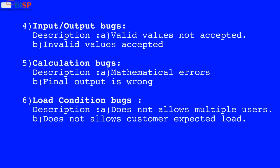4. Input or output bugs. Description: A. Valid values not accepted. B. Invalid values accepted. 5. Calculation bugs. Description: A. Mathematical errors. B. Final output is wrong.